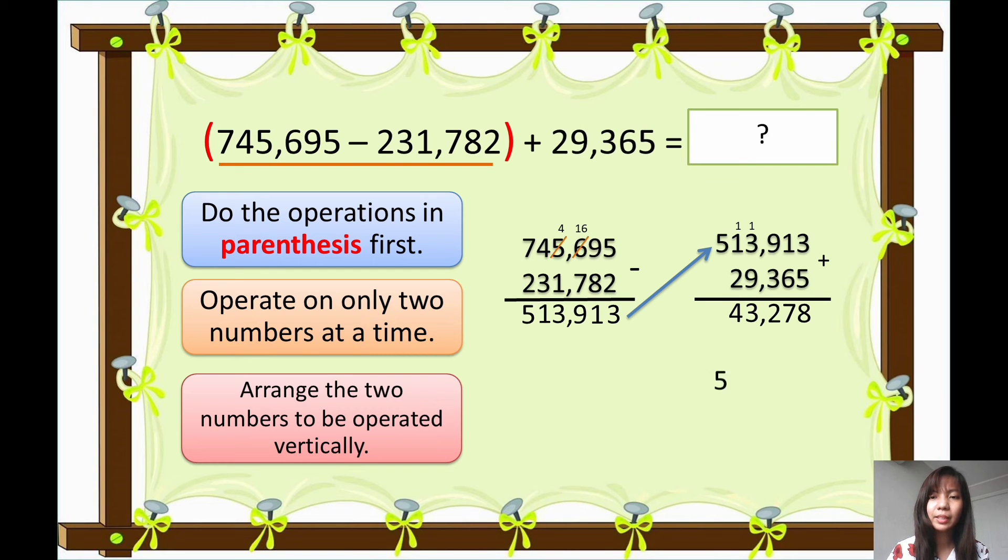All right, so now our final answer is 543,278. Understand? Okay, so this is how you're going to solve the problems involving more than one operation.